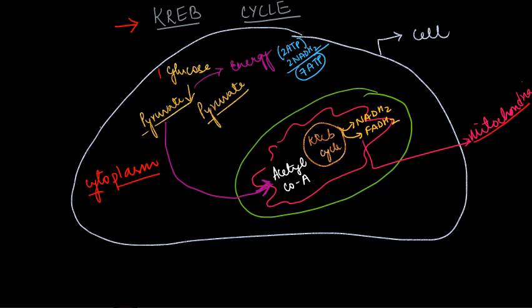From one glucose we got two molecules of pyruvate. So these two molecules of pyruvate produced after glycolysis enter into the mitochondria, and this entry of pyruvate inside the mitochondria is active transport — that means they need ATP to move inside the mitochondria. In glycolysis, the energy produced is 7 ATP. If you missed my previous lecture on glycolysis, please go through that first.